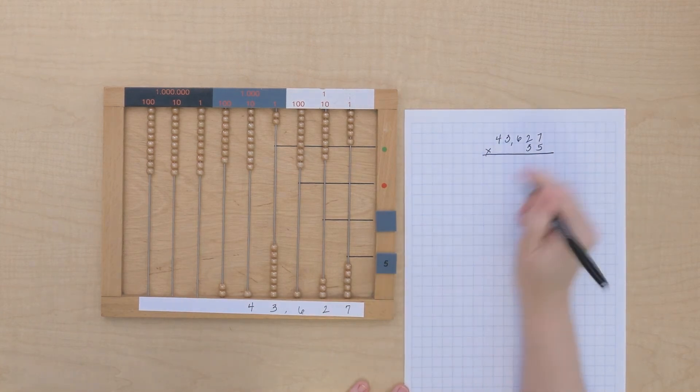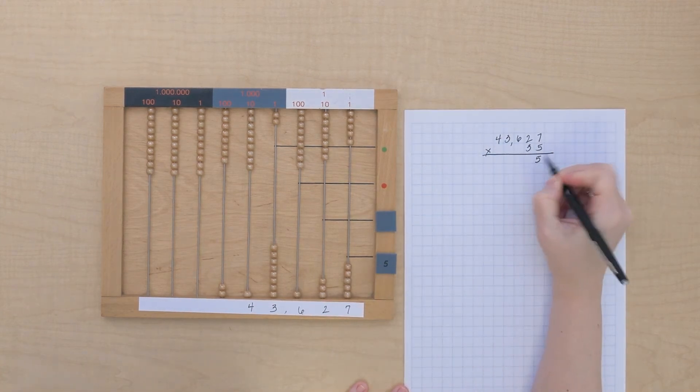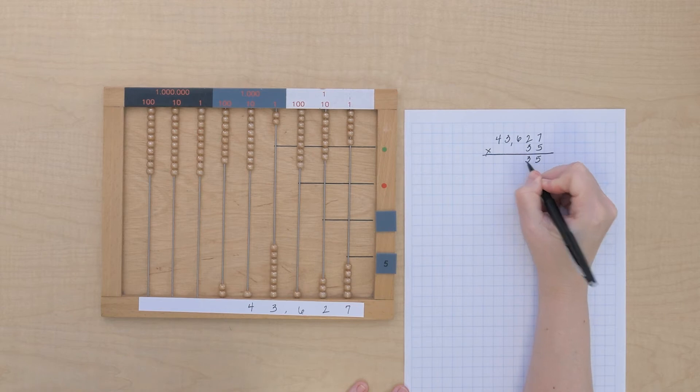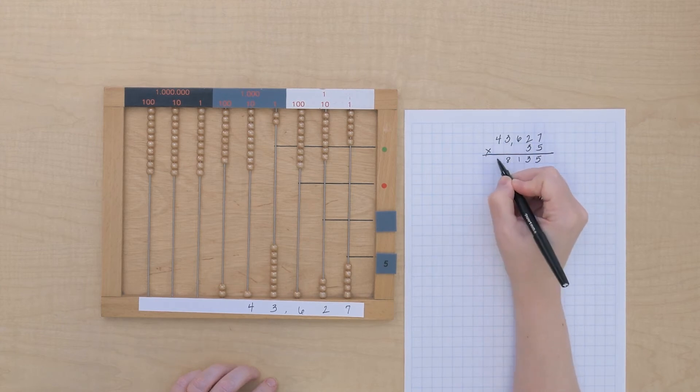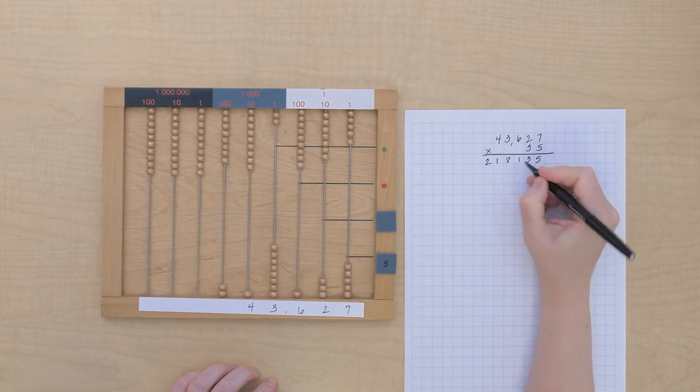So, I'm going to write that down. We have 5 units, 3 tens, 100, 8 thousands, 1, 10,000, and 200 thousands.